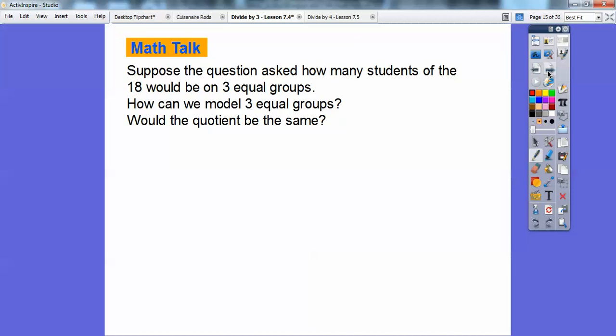So here's a different sort of question. Suppose the question is asking how many students of 18 would be in three equal groups. This is a little bit different. They're not groups of three, they're in three different groups. So how can we model three equal groups and would the quotient be the same?